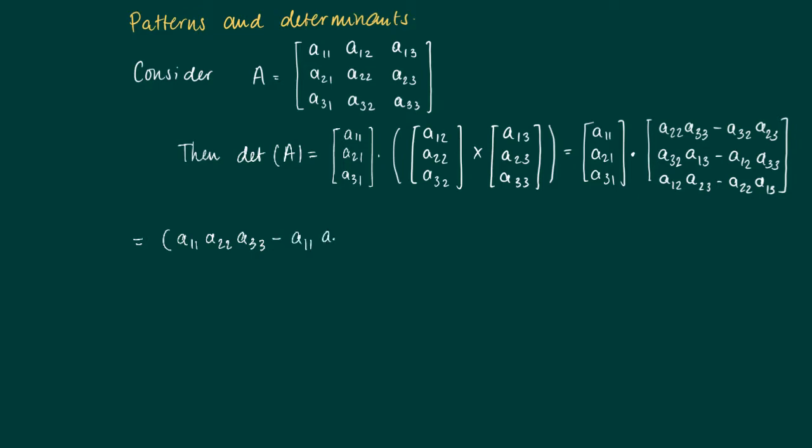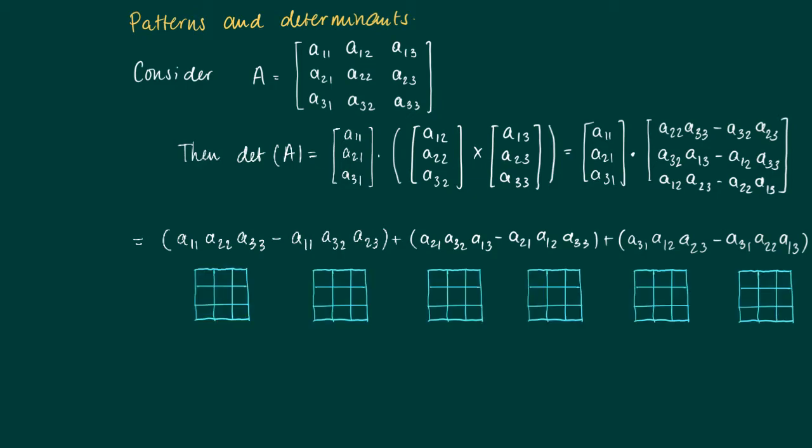We just continue in this way. And if we look more closely at these elements and where we take them from the matrix, then we see that a11, a22, a33 are just the diagonal elements of A. And here we get a different selection from each row and each column. And a21, a32, and a13 is again a different choice of rows and columns, etc. So actually what we see is something that I will call a pattern.